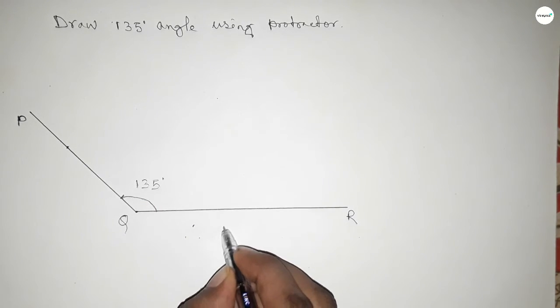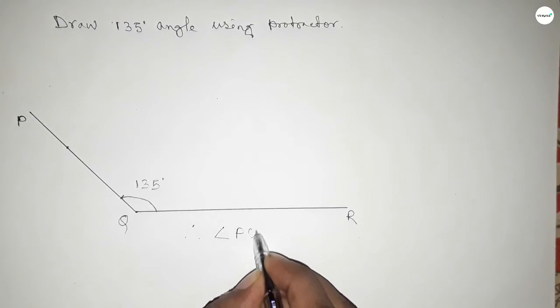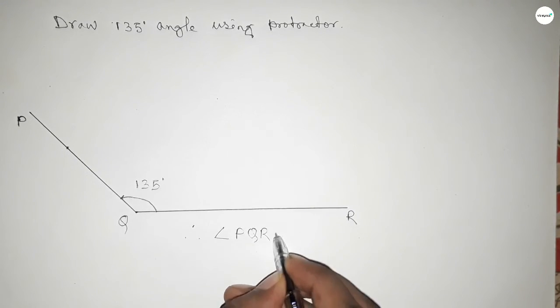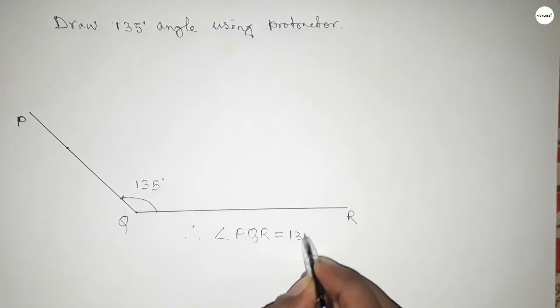Therefore, angle PQR equals 135 degrees. That's all, thanks for watching. If this video is helpful to you, please share it with your friends. Thanks for watching.